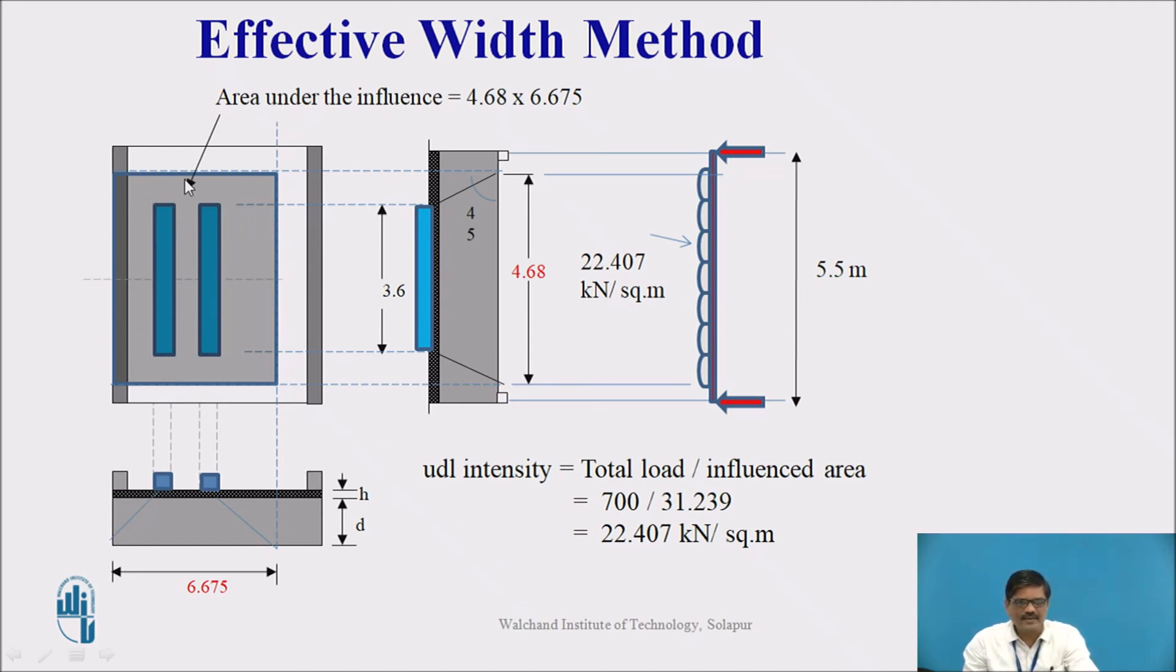This can be visible here in this particular slide. This ash color area shows the area under the influence of the load. This particular width is 6.657 and the length is 4.68. The total load is 700 kN that we know, and this 700 kN is assumed to act uniformly on this particular area.